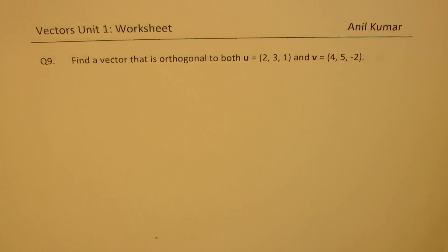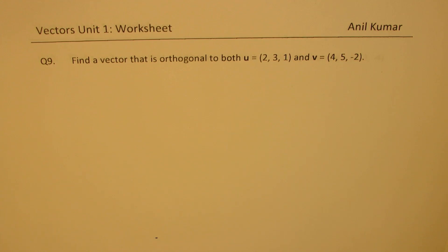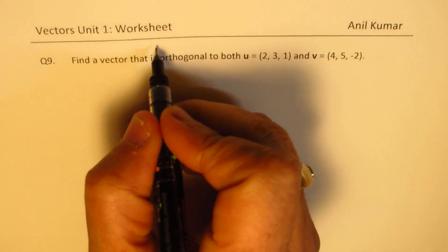I'm Anil Kumar, welcome to my channel and the new website Global Math Institute. We are looking into questions from a worksheet contributed by Lisa, a student in Ontario, Canada. Here is question number nine, which relates to dot product of vectors application. We'll discuss two questions, number nine and ten, in this video. Question nine is: find a vector that is orthogonal to both u=(2,3,1) and v=(4,5,-2). Orthogonal means perpendicular.